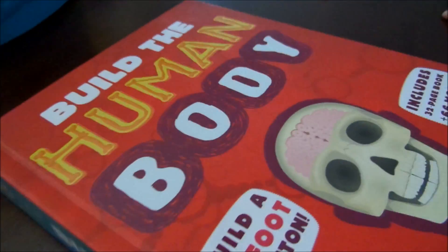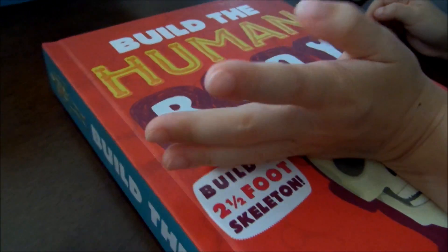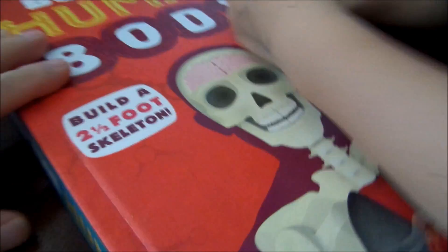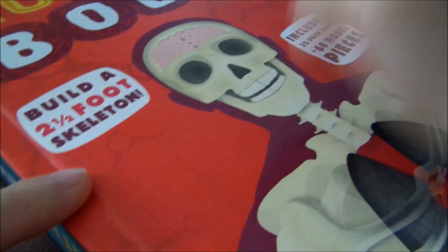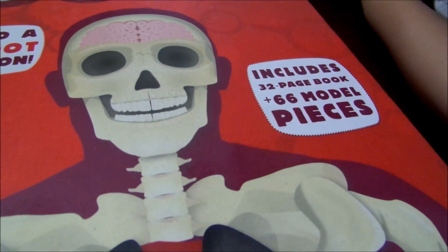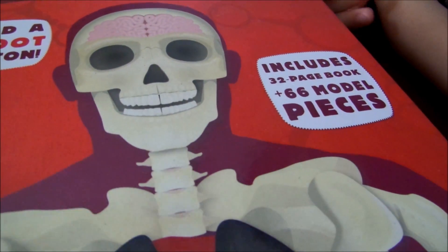Build, what does that say Jace? Build a human body. So what else could you build? Build a two and a half foot skeleton. Includes 32 page book plus 66 model pieces.